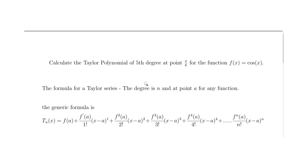In this video we're going to calculate the Taylor polynomial of 5th degree for the function cosine of x at the point pi over 6. For the Taylor series we need the number of degrees, so in our case n is 5, and the point a is pi over 6.